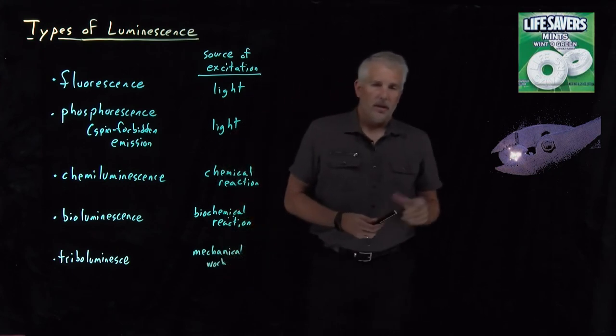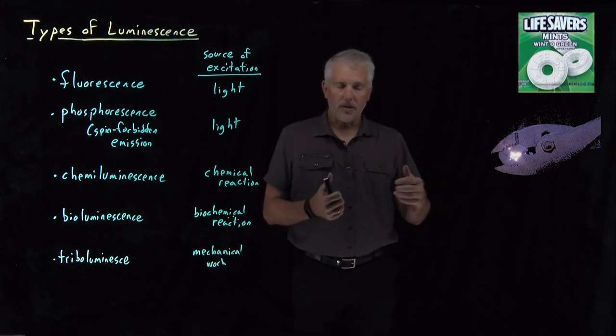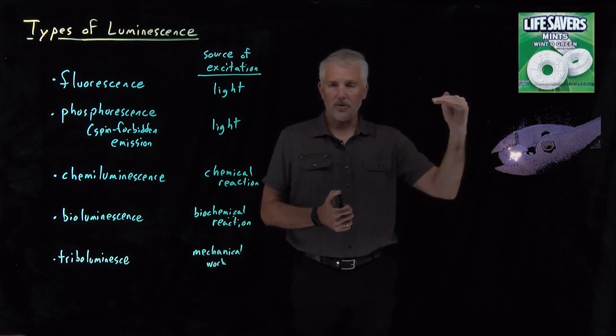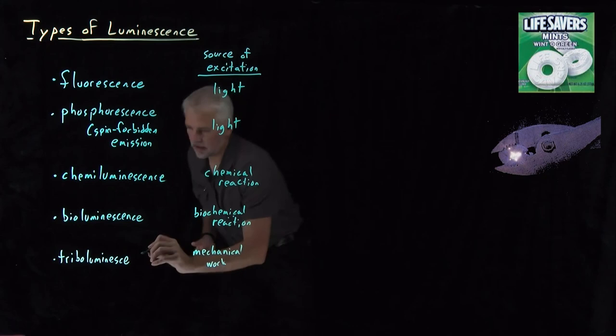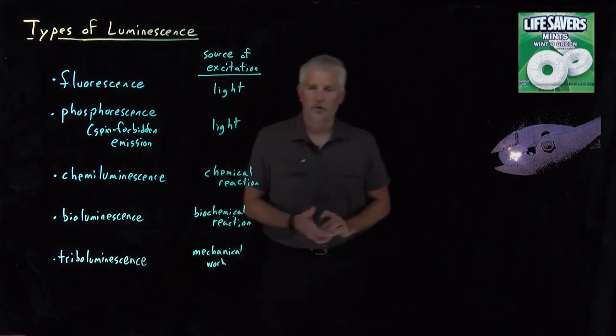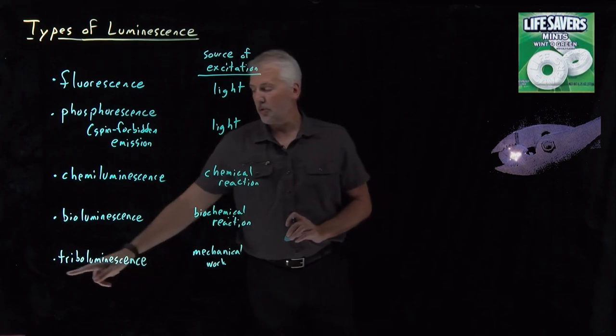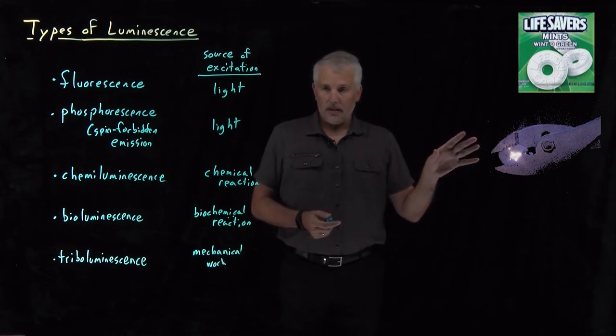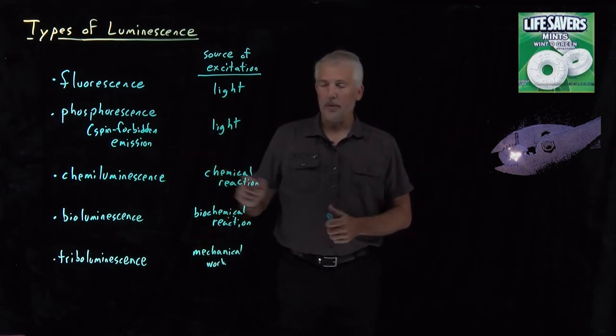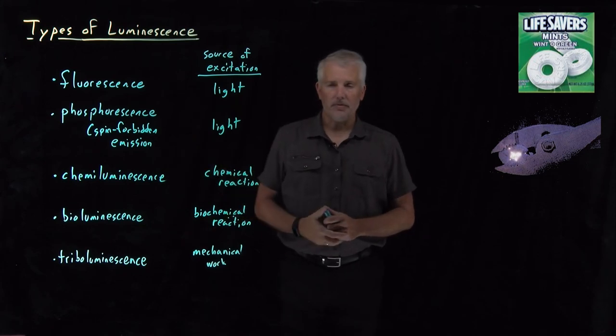So we've put enough energy into the molecules of this wintergreen lifesaver by crushing it, by compressing it, by causing the friction in the molecules to rub against one another, and that is enough energy to excite some of the molecules into an electronically excited state. When they fall back down, they give off visible photons. So that's an example of triboluminescence. Triboluminescence comes from the root word for friction. So this is luminescence due to friction or due to mechanical work. So the point is not all light that is emitted by chemical molecules is the same type of luminescence. Depending on where the source of the energy that gave rise to that emission comes from, we categorize those different types of photoluminescence differently.